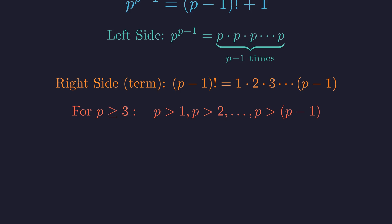When we compare them term by term, for any prime p of 3 or more, p is strictly greater than every single number in the factorial's product. Therefore, the product on the left must be strictly greater than the product on the right.